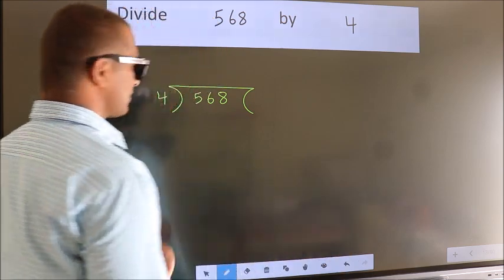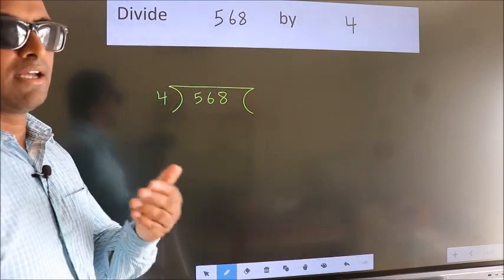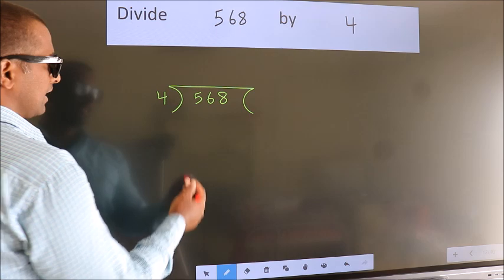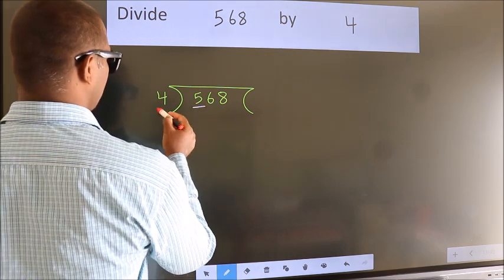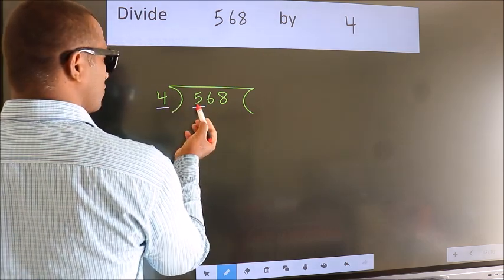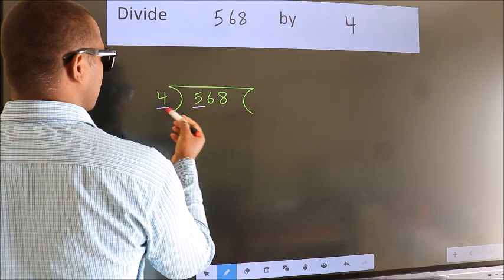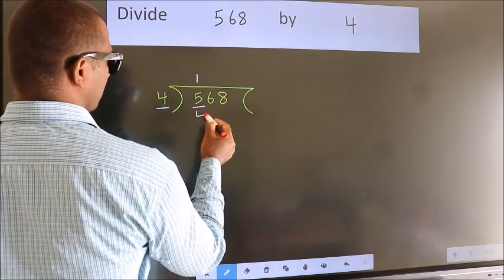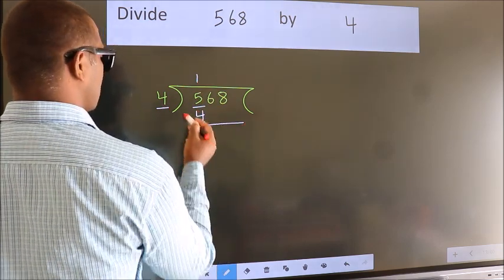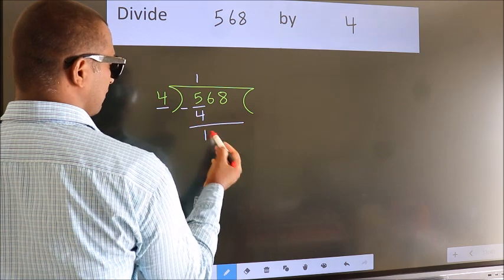This is your step 1. Next, here we have 5, here 4. A number close to 5 in 4 table is 4 once 4. Now we should subtract. We get 1.